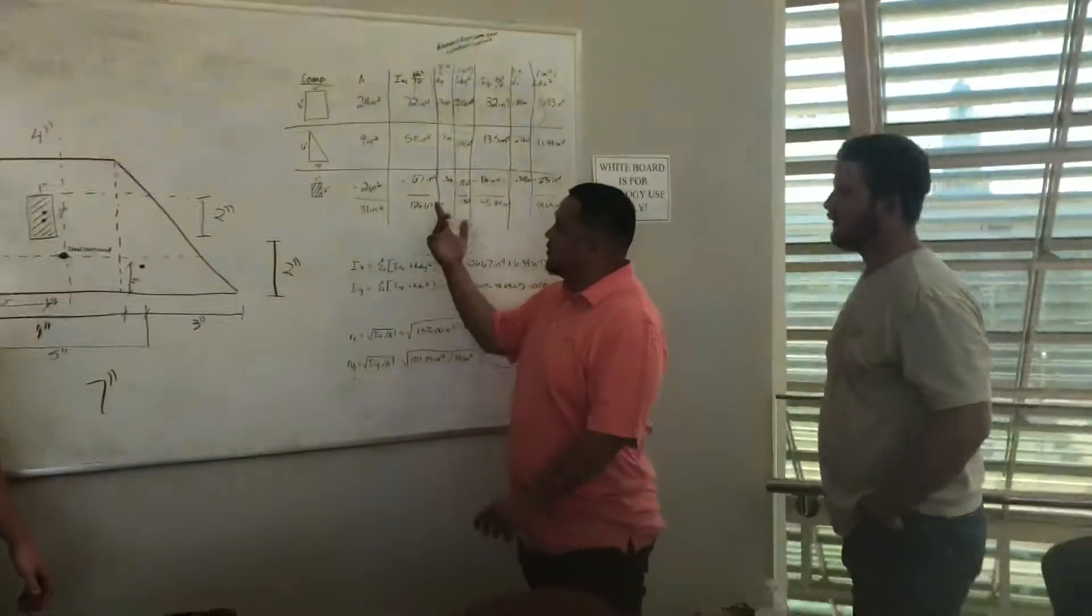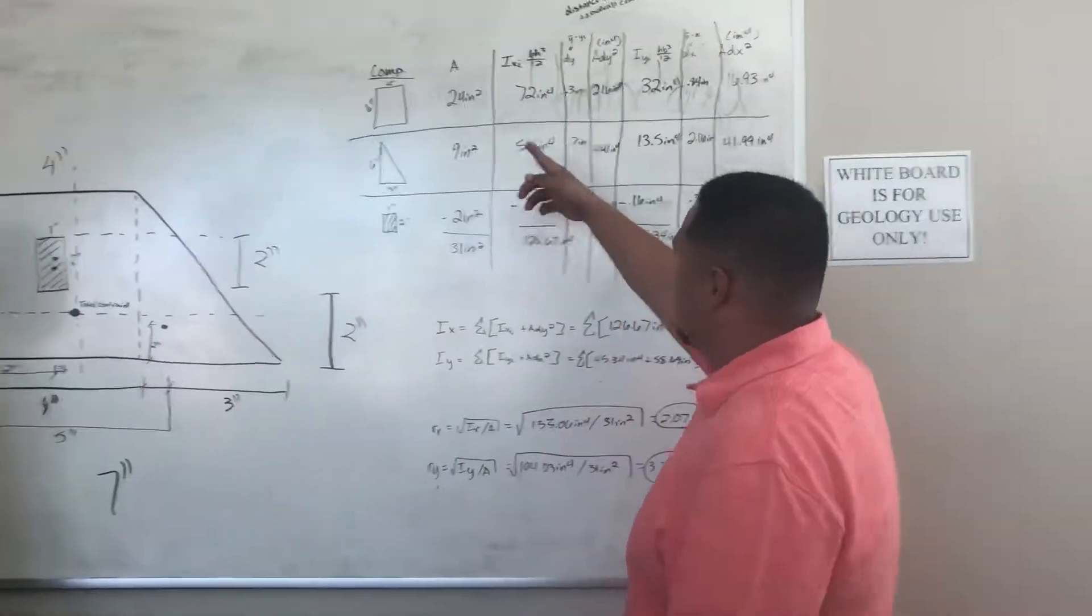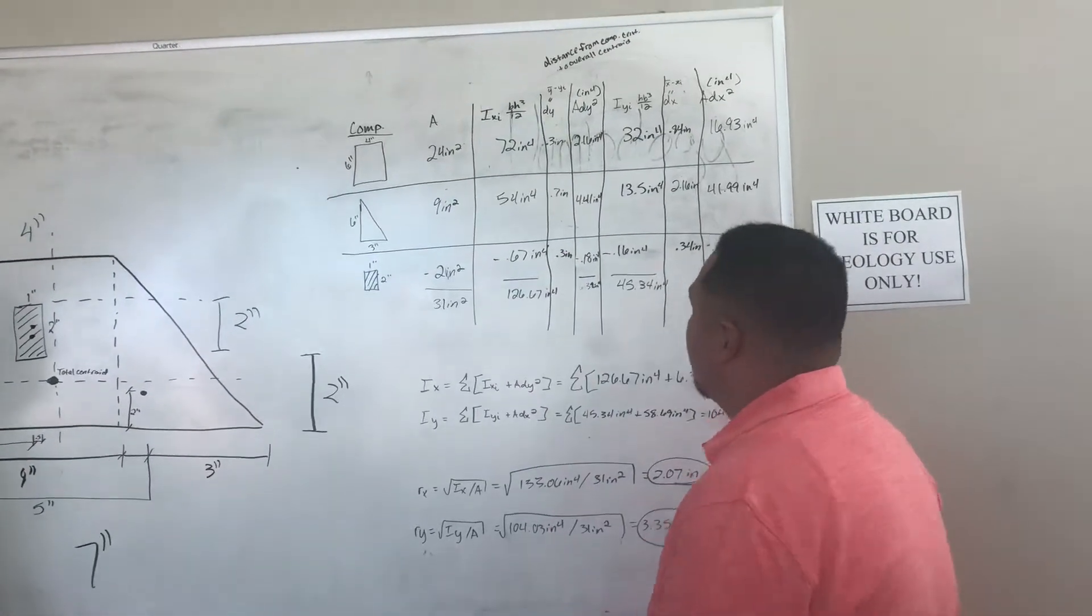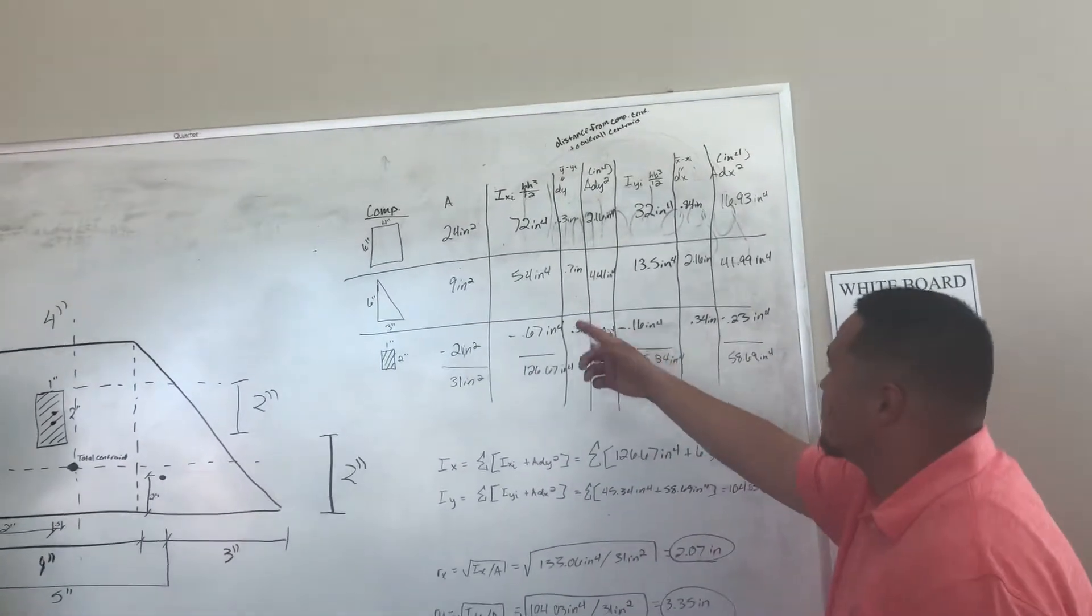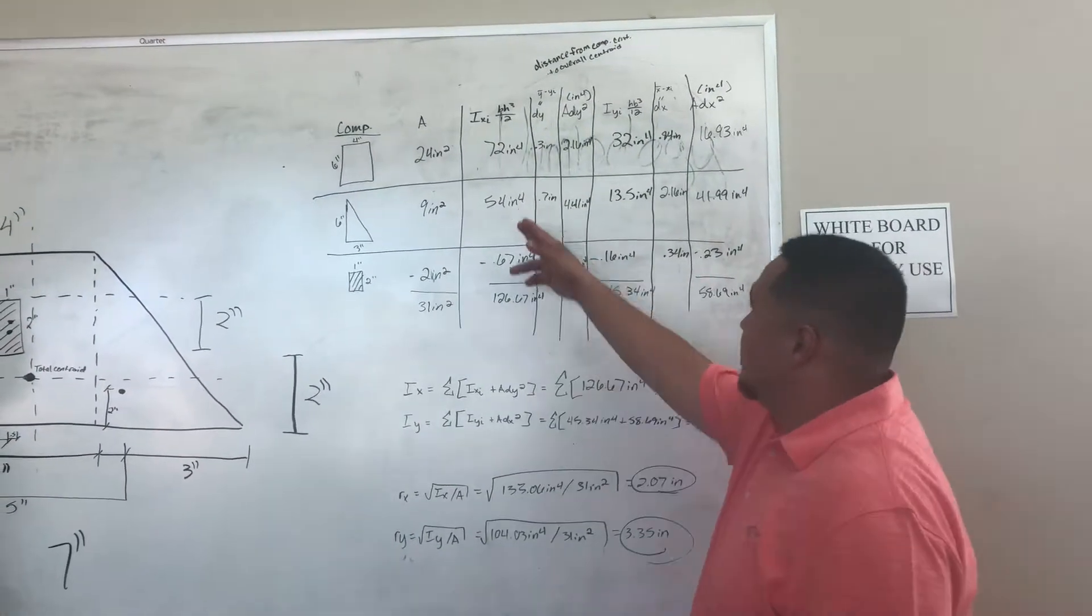This is our other chart. We have it broken down into three components. Here we have our area of each component. That's easy - base times height, as we've explained. The second column, you have IX. That's the base times the height cubed over 12, and you get these measurements.